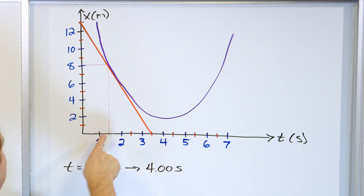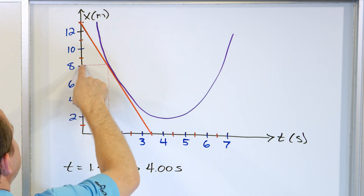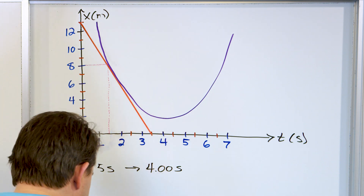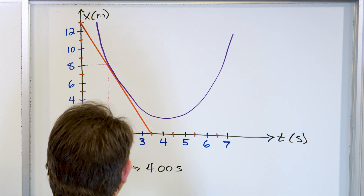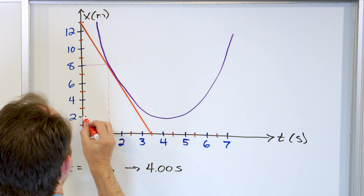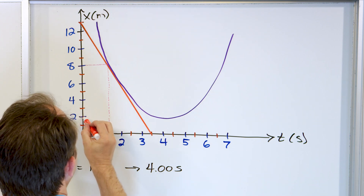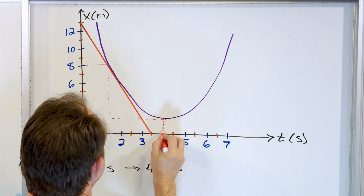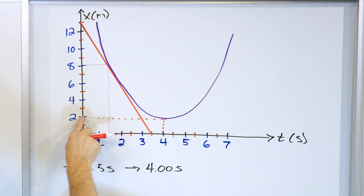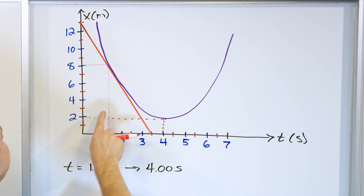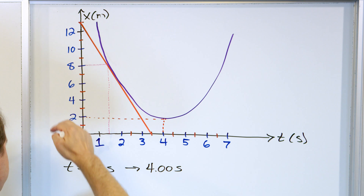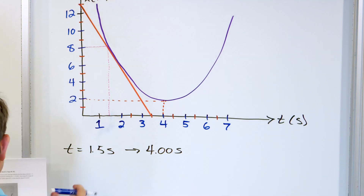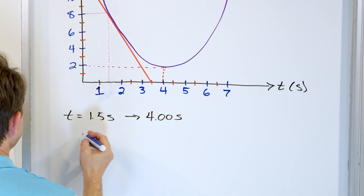We have 1.5 seconds marked here. At 4 seconds, we're over here. At 4 seconds, we're up at 2 meters away, and at 1.5 seconds, we're at 8 meters away. So we're going to find the average velocity.